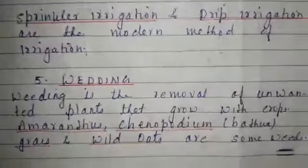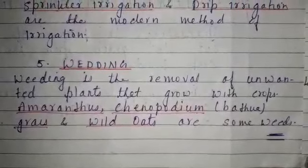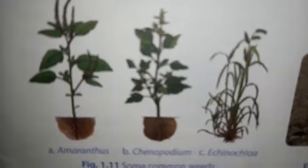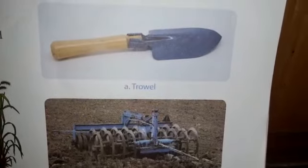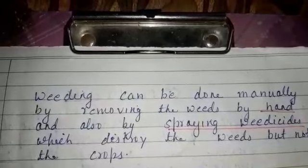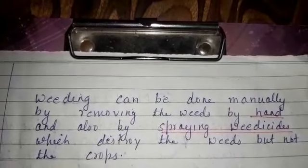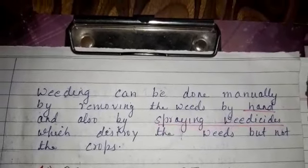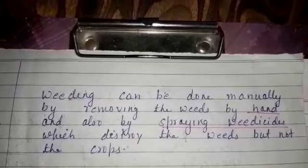The fifth step is weeding. Weeding is the removal of unwanted plants that grow with crops. Weeding can be done manually by removing the weeds by hand, or by spraying weedicides which destroy the weeds but not the crops. Weedicide is like a pesticide that only destroys weeds without harming any crops.